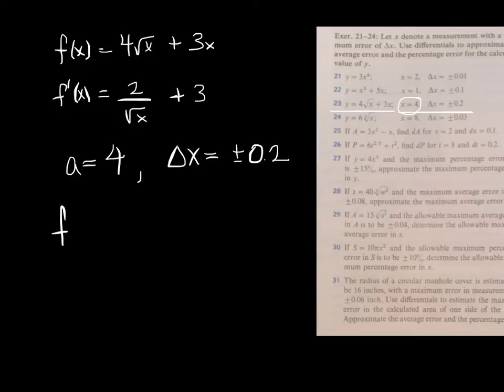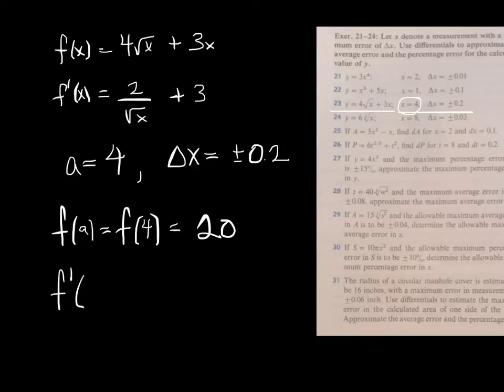Now, let's figure out what f of a is. f of a is f of 4, which is 4 times 2 plus 3 times 4, which is 8 plus 12. We'll call that 20. Again, you could have paused the video to figure that out for yourself. You can do the same thing for f prime of a. f prime of 4. It looks like it's going to be about 4.